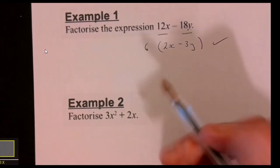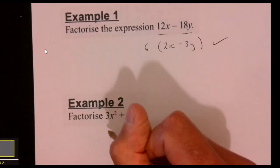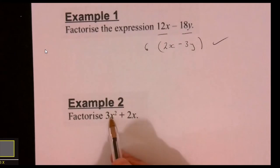This one: what have we got here? I'm looking to see what's common. I look at the numbers first, but there isn't a common factor there, not a nice whole number. So I'm going to leave those alone. But if I look at the letters, that's got x squared and that's got x, so I can take x out as a common factor.